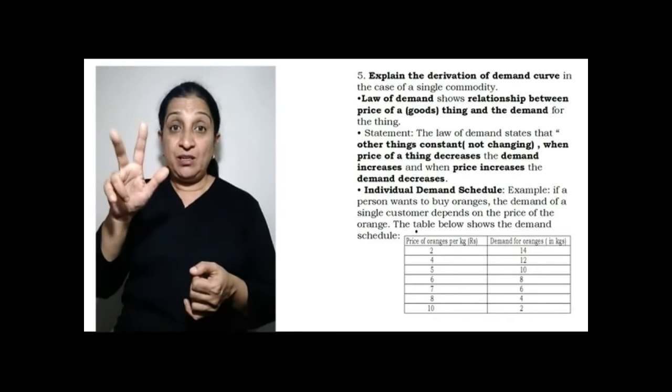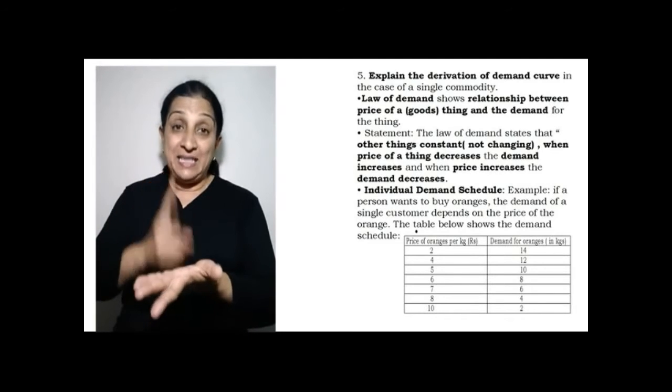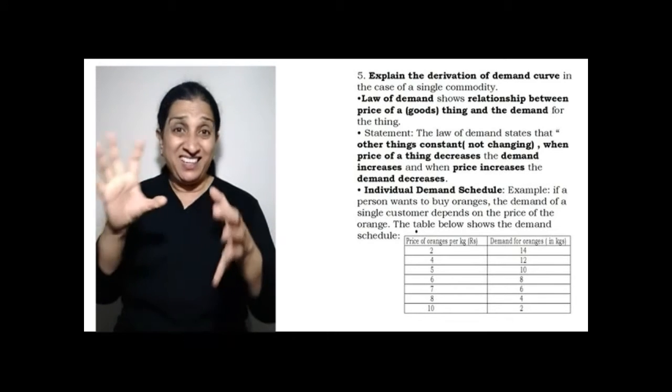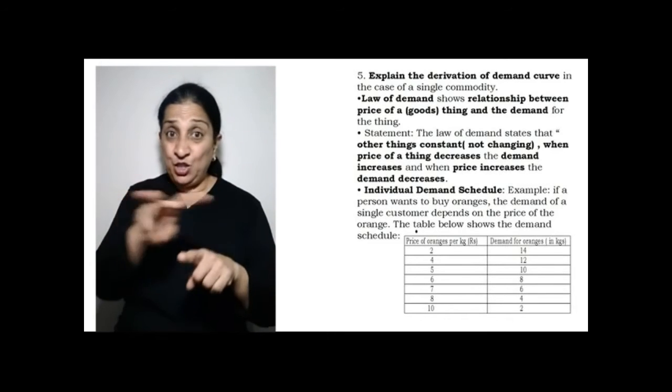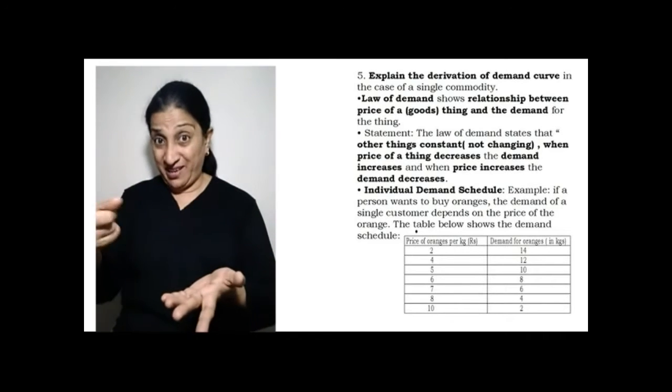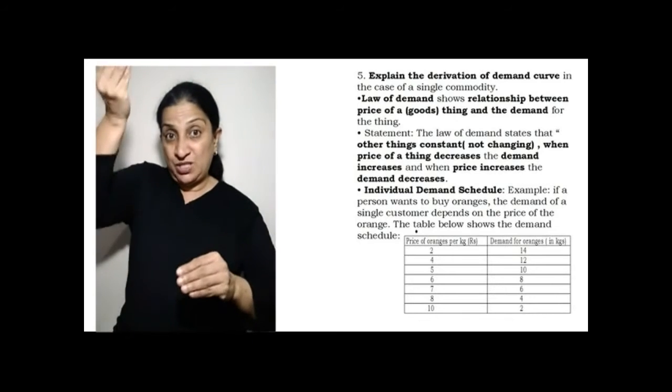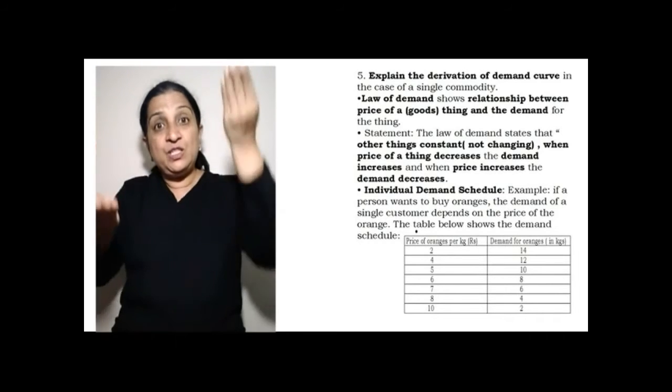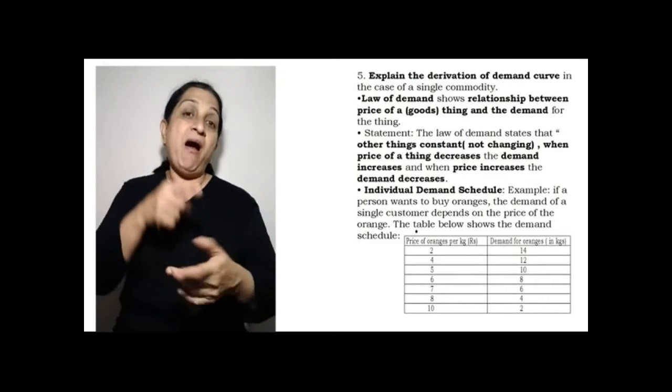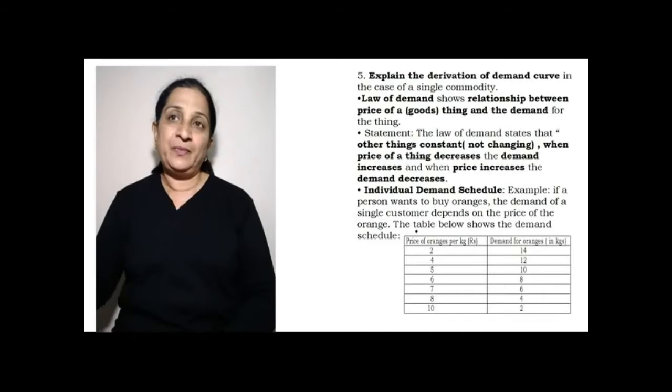In the table there, you will see that the price of oranges, when it is 2 rupees per kg, the demand is 14 kgs. If you have the price as 8 rupees per kg, then the demand reduces to 4 kgs. If you see the relationship between demand and the price, you will see that if one increases, the other decreases.